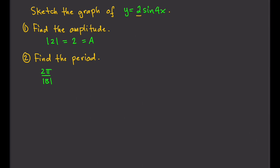Remember that the general form of a sine or cosine function is y equals a sine (bx minus c) plus d. That's the standard form of the function. So, if this is the function that we have, then that means c is 0 and d is also 0. b is then 4, and a is 2. So therefore, in this case, our b is 4. We plug that in: 2π over 4, because the absolute value of 4 is 4.